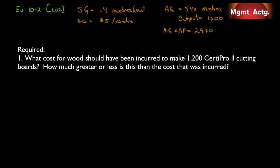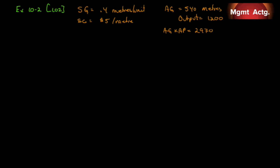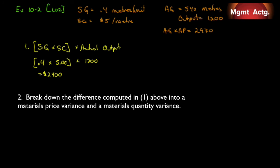Required. Number one, what cost for wood should have been incurred to make 1,200 Certi Pro 2 cutting boards? How much greater or less is this than the cost that was incurred? So in other words, we're looking for a flexible budget amount. If the actual output was 1,200, what we're asking is what should have been the cost? So number one is very easy to do. We're going to have our standard quantity times our standard cost times actual output. In other words, we're going to get a budget amount for this level of output. So our standard quantity is 0.4. Our standard cost is $5. And our actual output is 1,200. And we'll find that that equals $2,400. There you go. It's really just that simple.